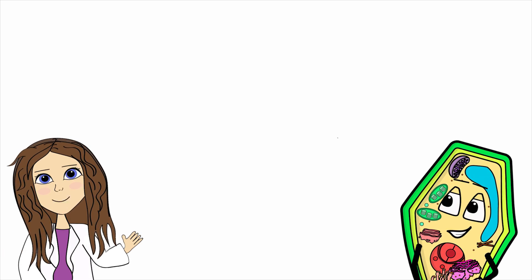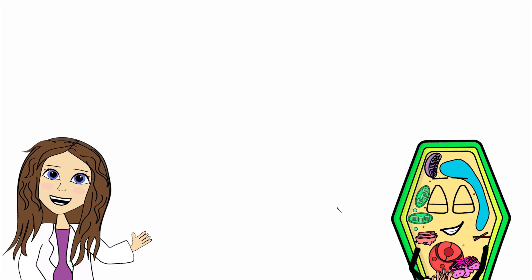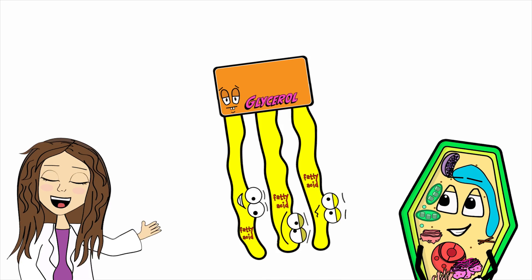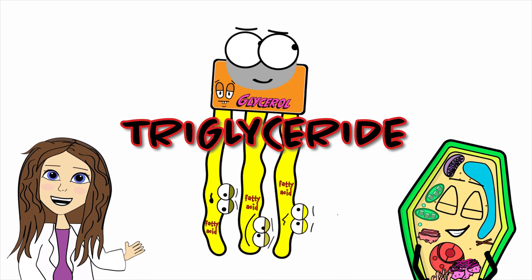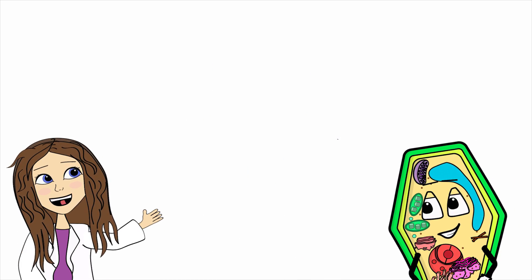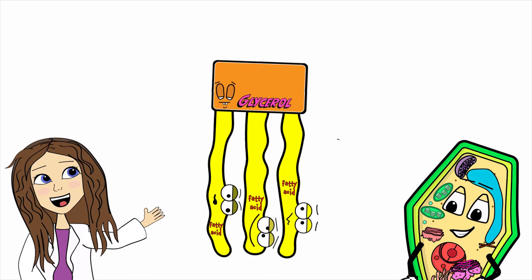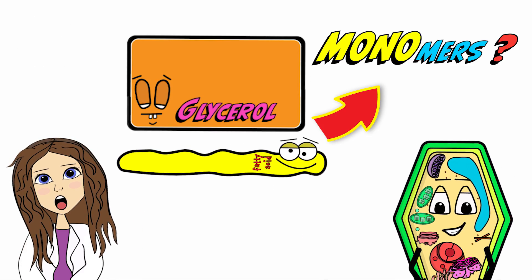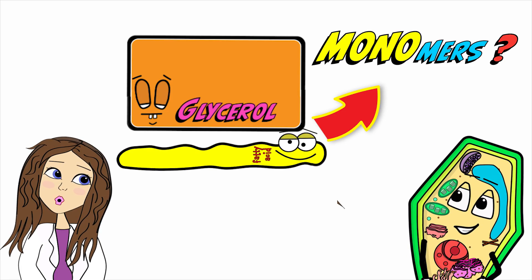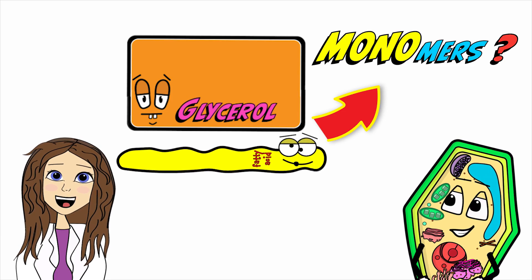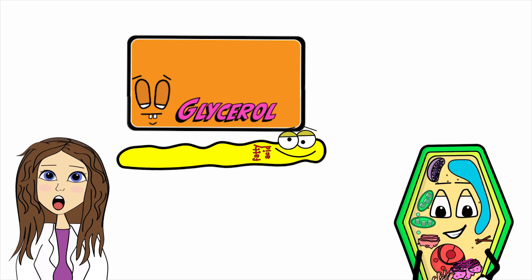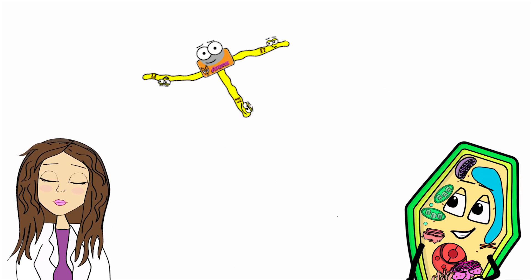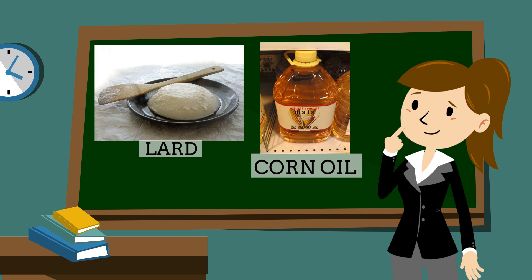Let's build a lipid. Many lipids are formed when you combine a glycerol molecule with compounds called fatty acids. Today we are making a triglyceride, so we will combine one glycerol and three fatty acids. Most people don't consider lipids to have true monomers; thus they are not a polymer, since polymers are made up of monomers — ask your teacher what they want you to know regarding this. Corn oil and lard have a lot of lipids in them.